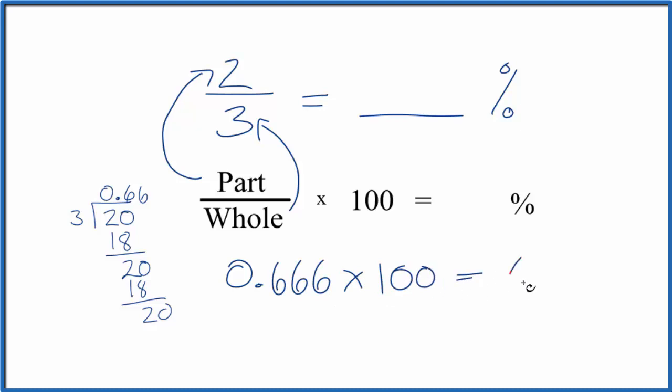That way when we multiply we get 66.6 and we could round that to 66.67 since this number just keeps repeating. Let's do that. So in answer to our question 2 thirds is 66.7 percent.